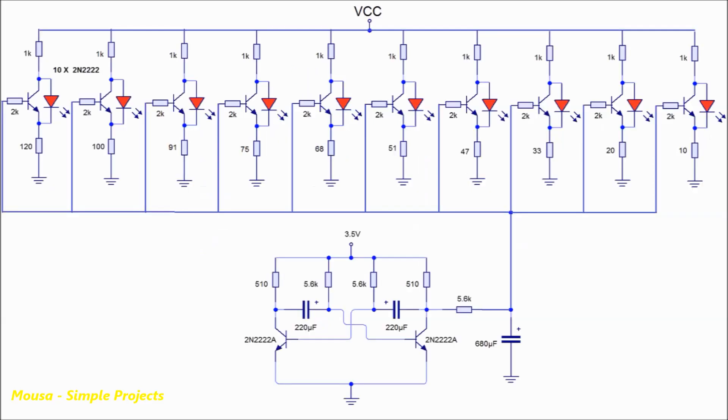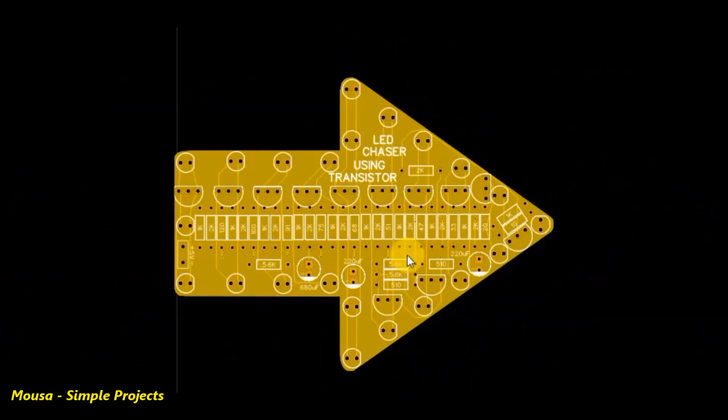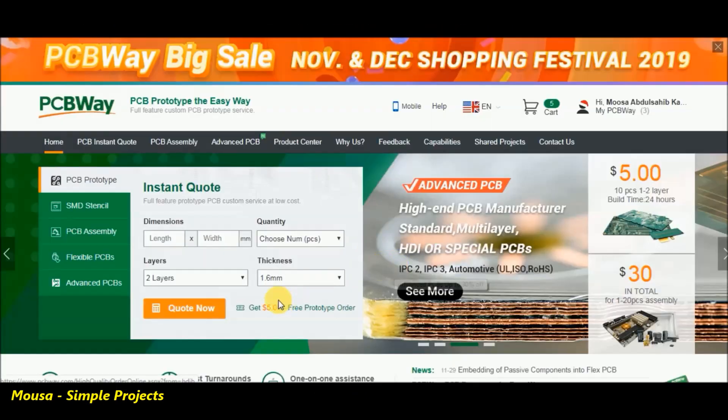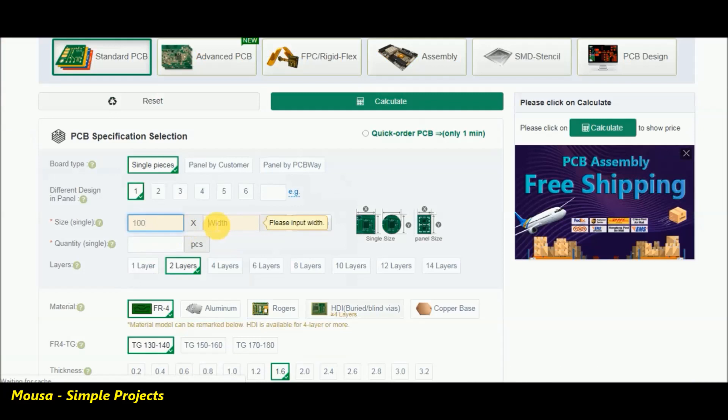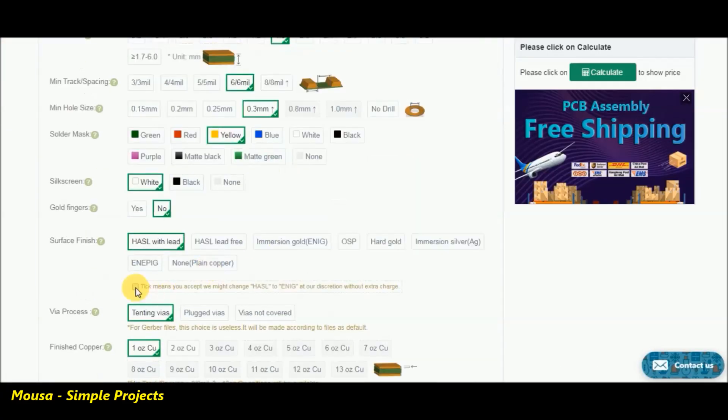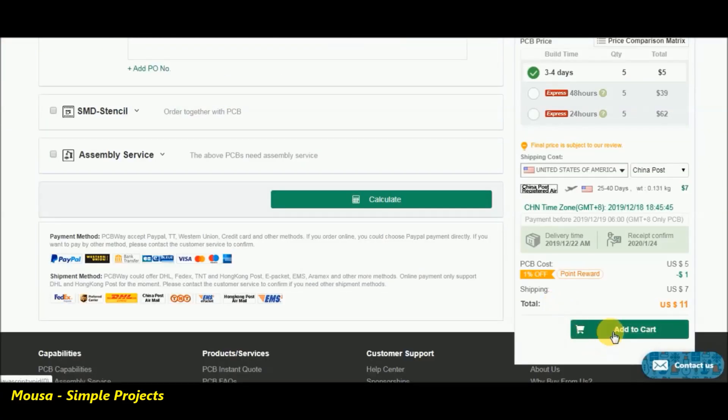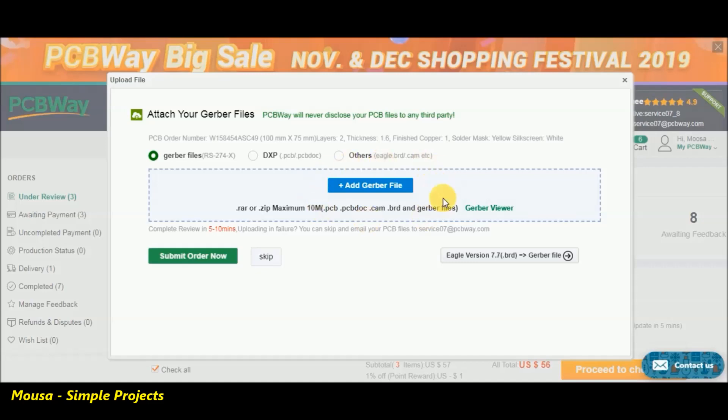Then I converted this circuit to PCB and went to PCBway.com. Insert the PCB size, quantity, and color, then click add to cart. Upload your Gerber file and complete the payment.